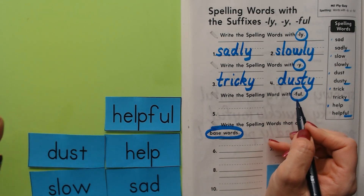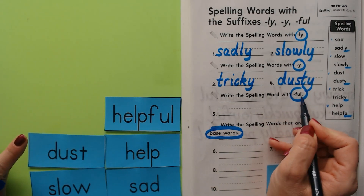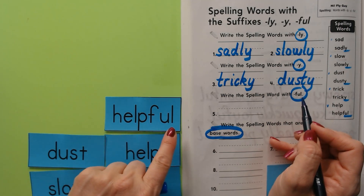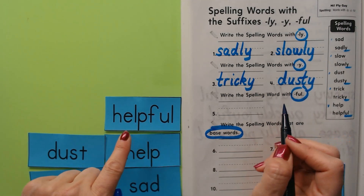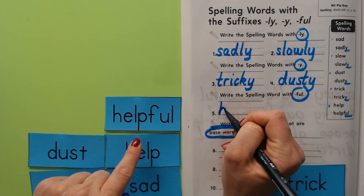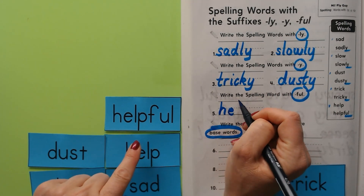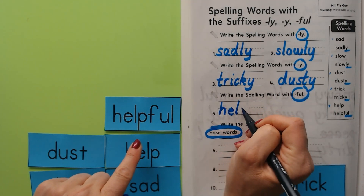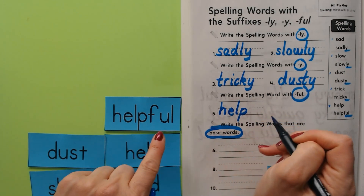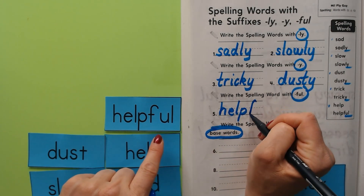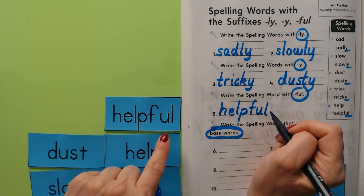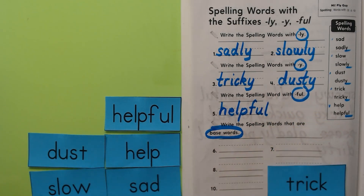There's just one word that has the suffix -ful and it's helpful. First write our base word: help. Now we write our suffix: F, U, L spells -ful. Helpful — done.